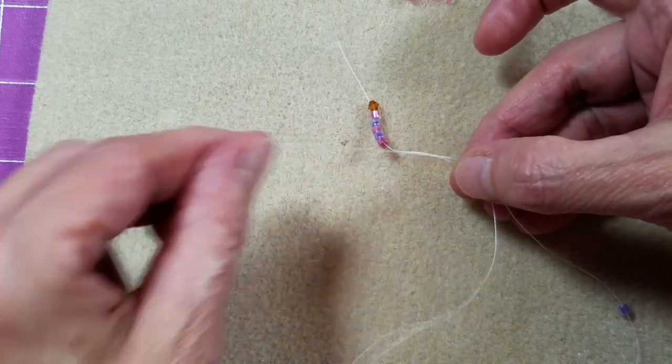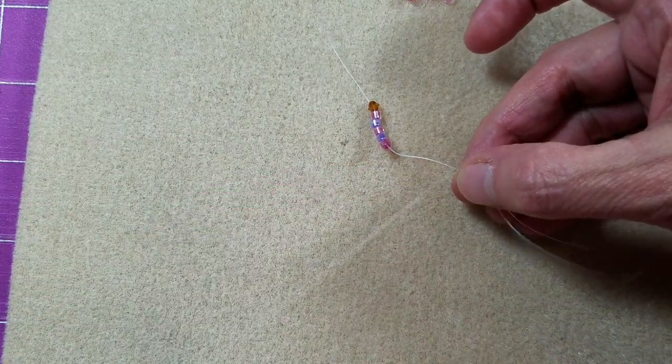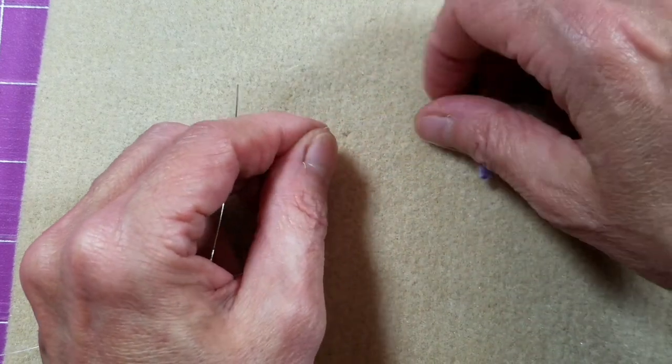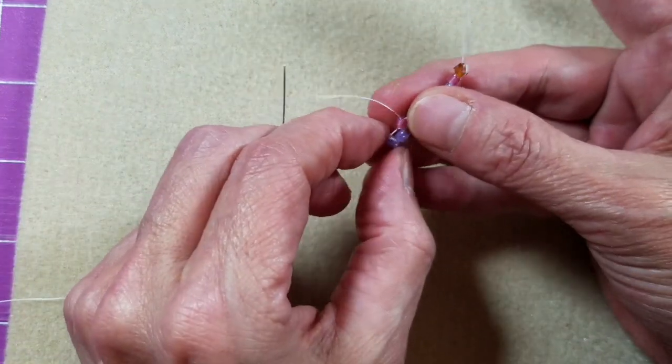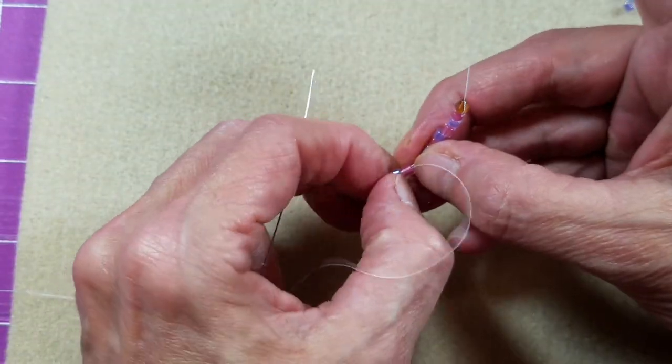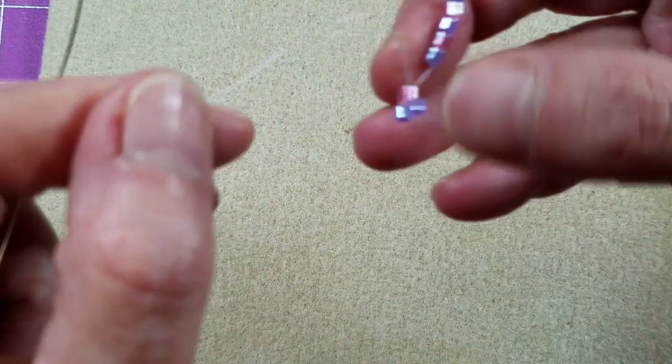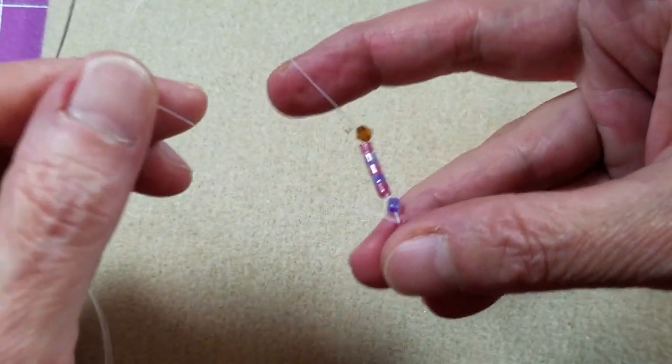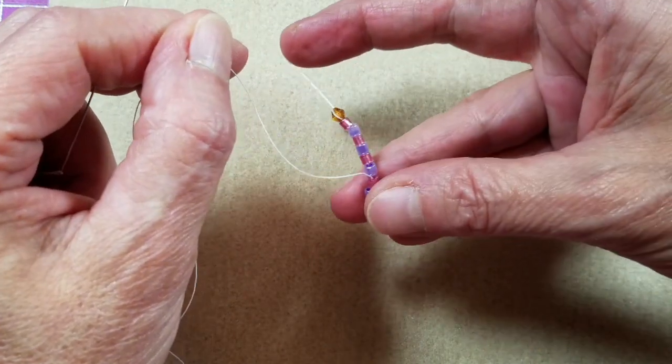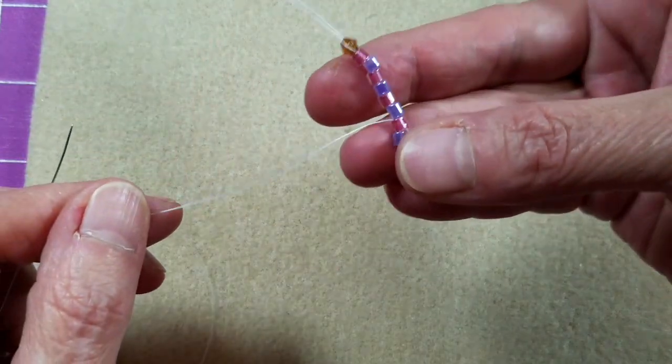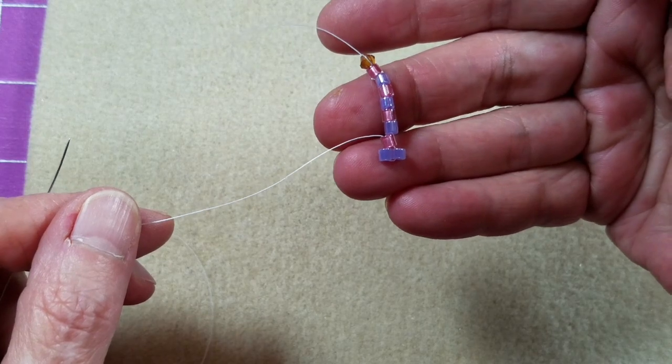You can see right there how I've dropped my work, and if I hadn't had a stop bead on, all my beads would have fallen off. I'm going to pull this up kind of tight because I want these two purple beads to sit side by side. If you've got a little bit of a gap, just hold on to those bottom two purple beads and pull your thread towards the tail thread. It brings the beads up next to the other ones.